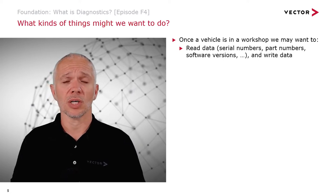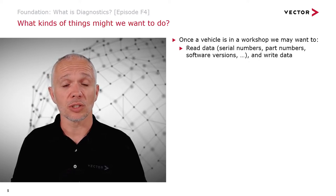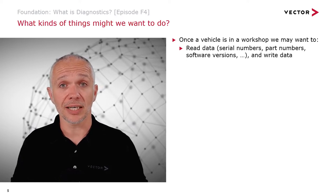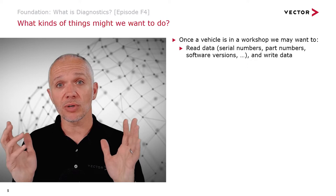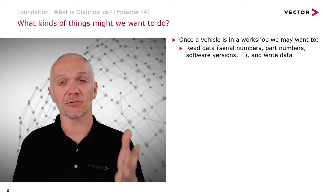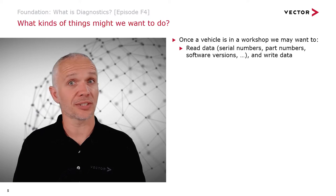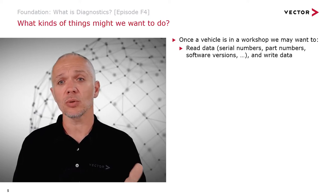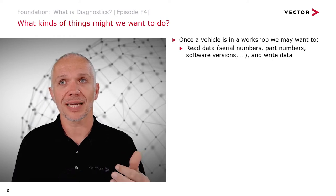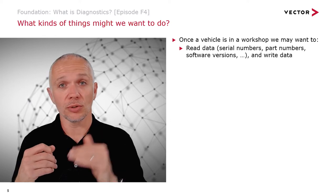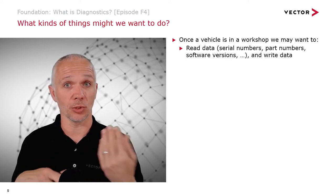So what are the things we want to do? If we get a vehicle in a workshop, we may want to read data — find out ECU serial numbers, in case we know there's a problem with a certain batch of ECUs that need replacing. Or other things like part numbers and software versions. Maybe there's a software update that fixes a known problem. We may also want to write data — a software update is a kind of writing data — but we can also turn on options in ECUs that provide additional functions. This is something you may encounter when buying a vehicle: options enabled at the dealership using diagnostics once you've paid for them.